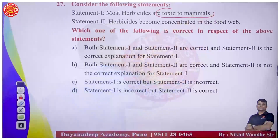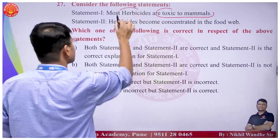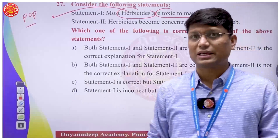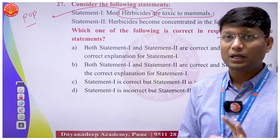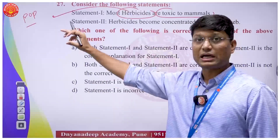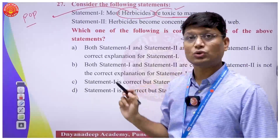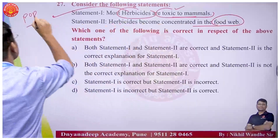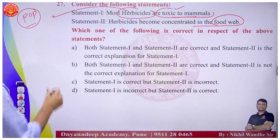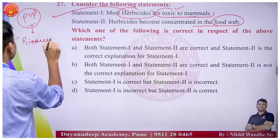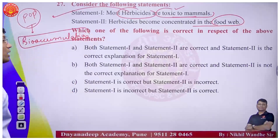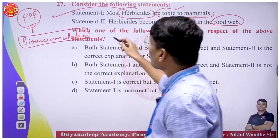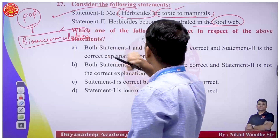Question 27: Most herbicides are toxic to mammals - that statement is correct. Most herbicides are persistent organic pollutants (POPs). These persistent organic pollutants are toxic to mammals. Herbicides become concentrated in the food web through bio-accumulation - over time, their concentration increases - which is why they are called bio-accumulating pollutants. Both statements are correct.